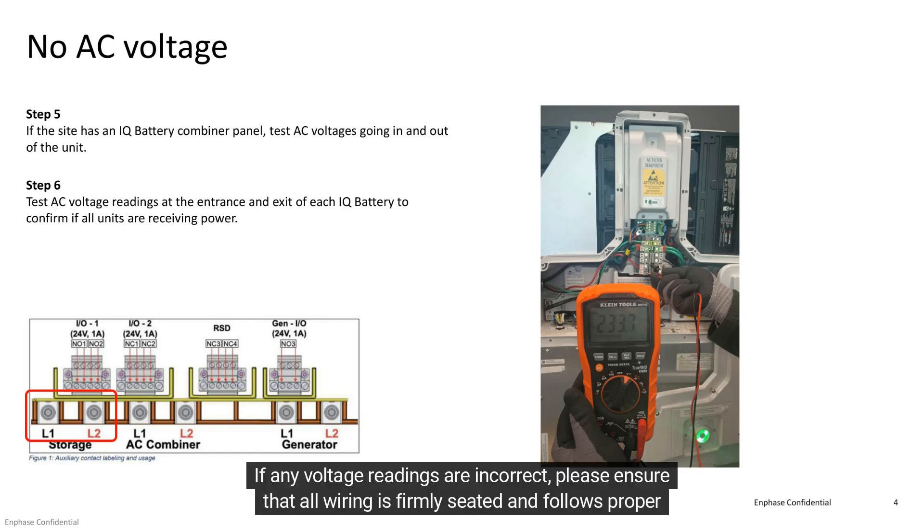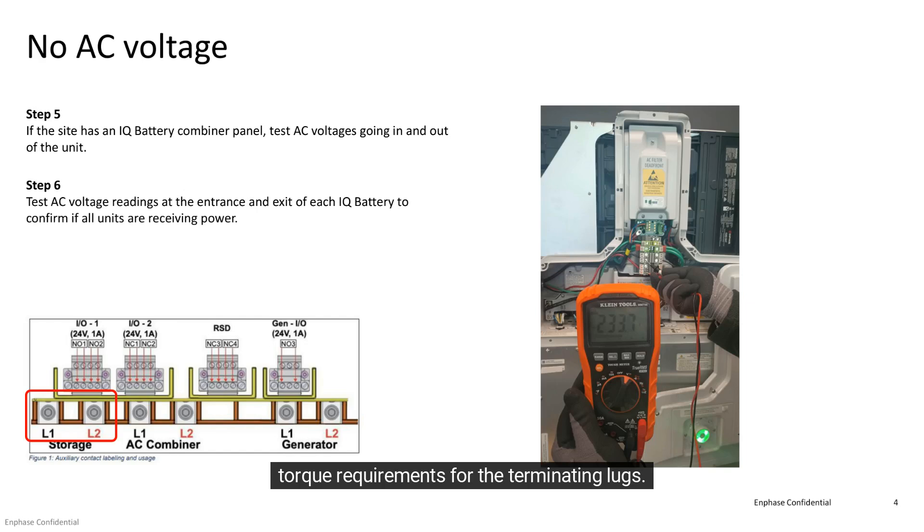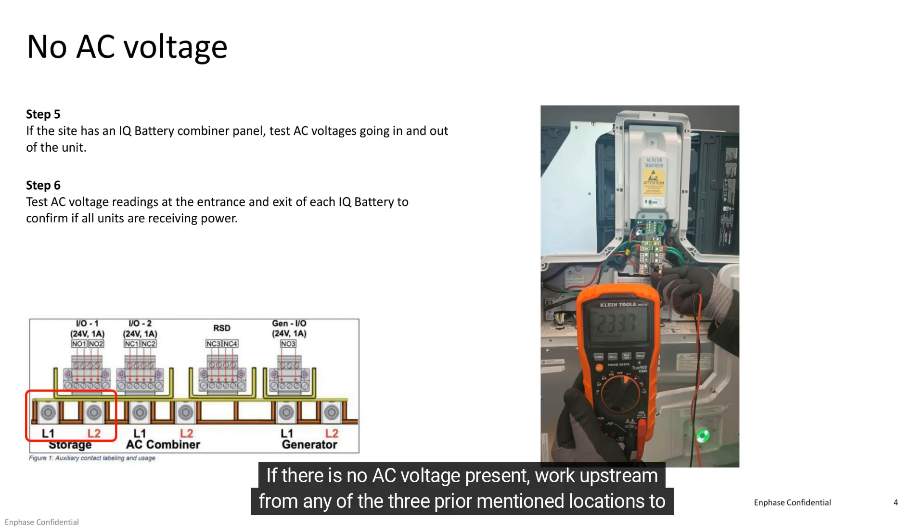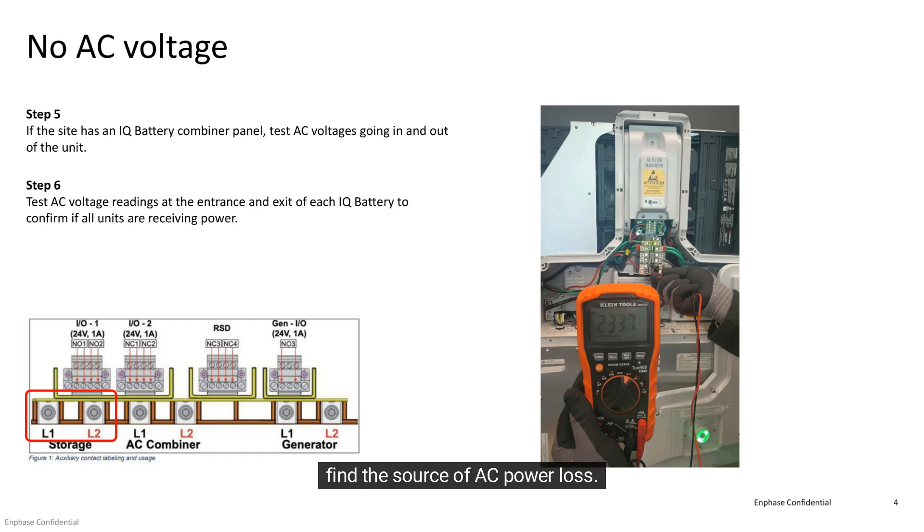If any voltage readings are incorrect, please ensure that all wiring is firmly seated and follows proper torque requirements for the terminating lugs. If there is no AC voltage present, work upstream from any of the three prior mentioned locations to find the source of AC power loss.